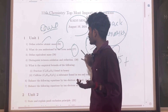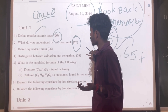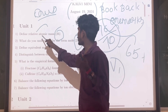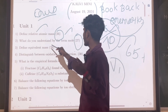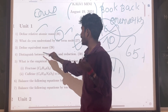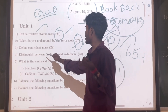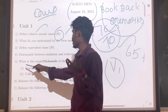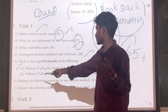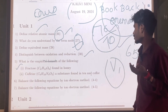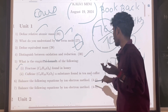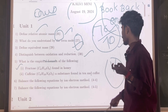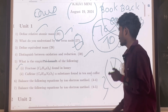Let's look at the first question — Unit 1: Relative atomic mass. Question number 26: What do you understand by the term mole? Question 27. Question 28: Define equivalent mass. Question 38: Distinguish between oxidation and reduction — very very important. Question 44 and 45: Balance the following equation by electron method and by ion electron method — 2 important questions.